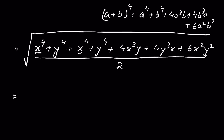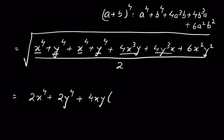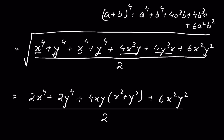Collecting like terms: x⁴ + x⁴ gives 2x⁴, and y⁴ + y⁴ gives 2y⁴. We can take 4xy as a common factor from the remaining terms, giving us: 2x⁴ + 2y⁴ + 4xy(x² + y²) + 4x²y², all upon 2, under the square root.